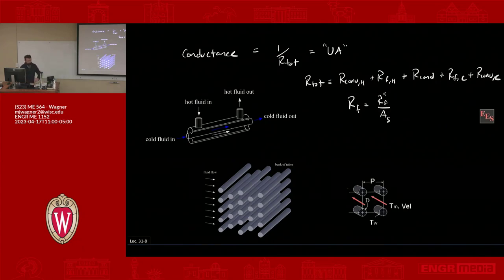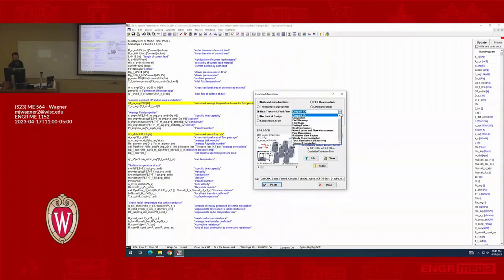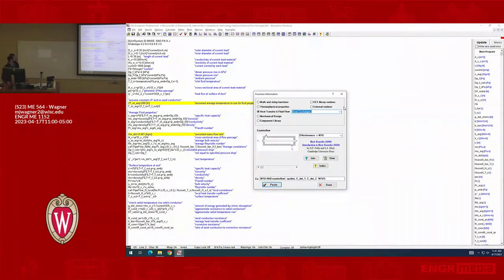So we could do that. I could show you how to go into EES. If we go into EES and you go to the function information, there's in the drop-down menu for heat transfer and fluid flow, there's two options for heat exchangers. So compact heat exchangers, and then there's also just plain heat exchangers.